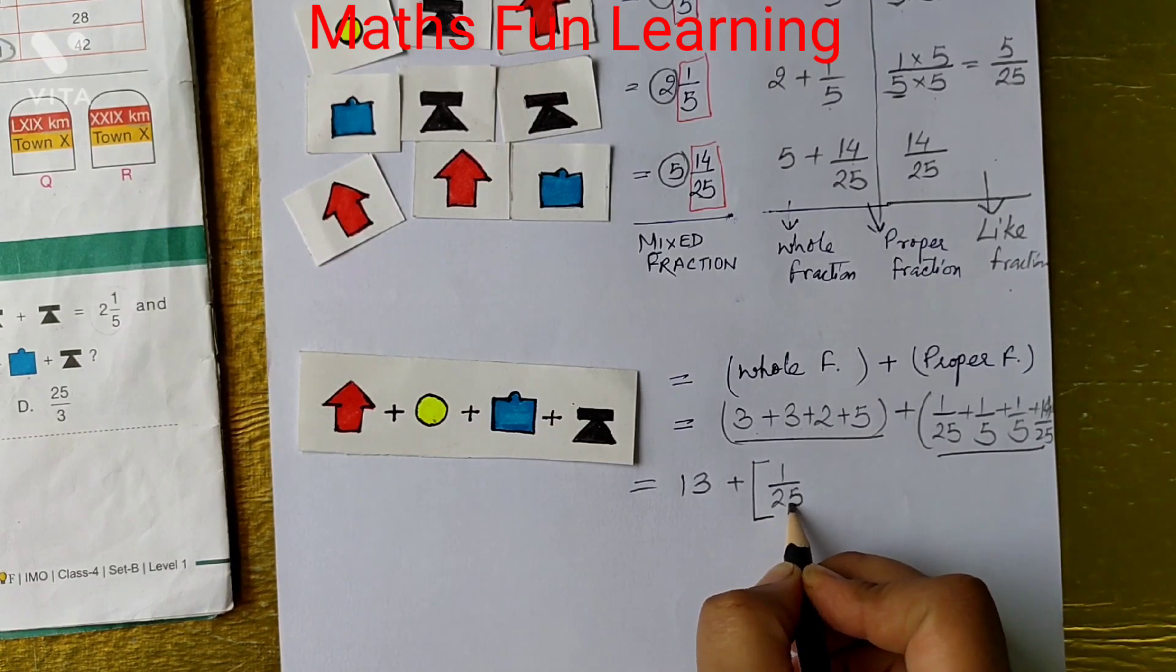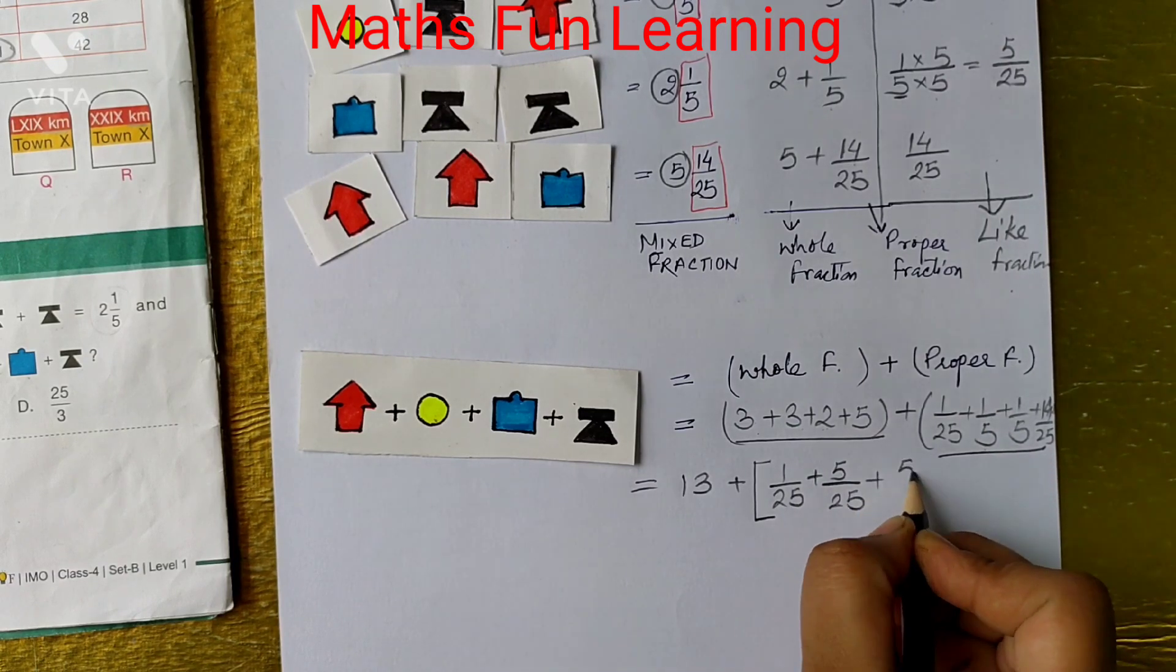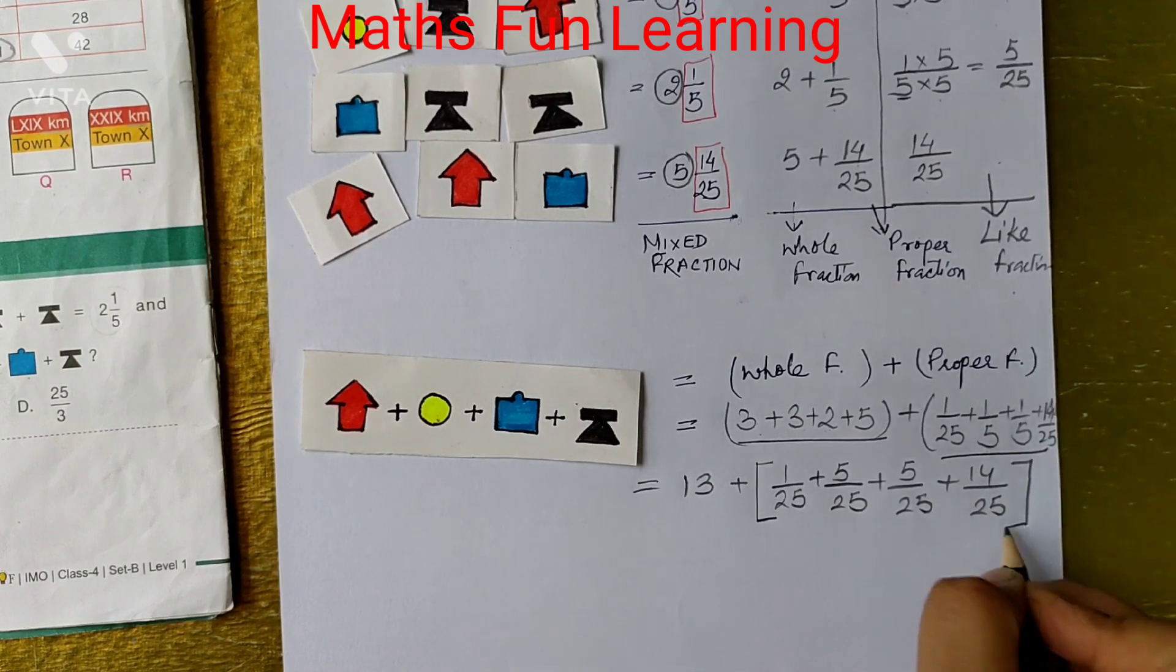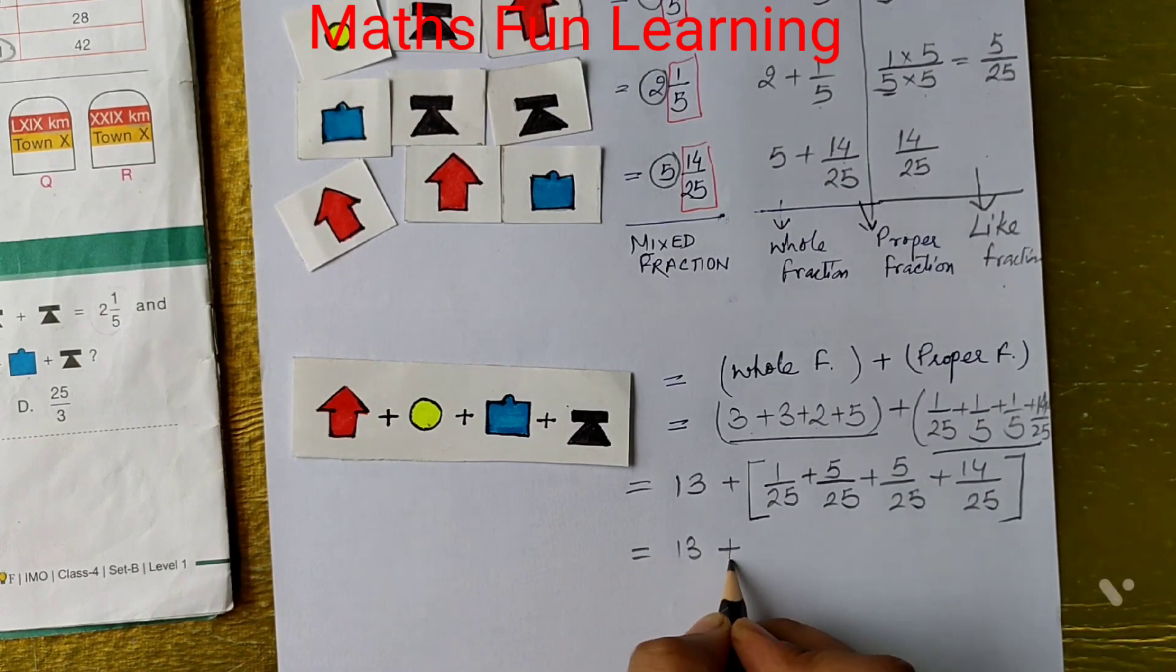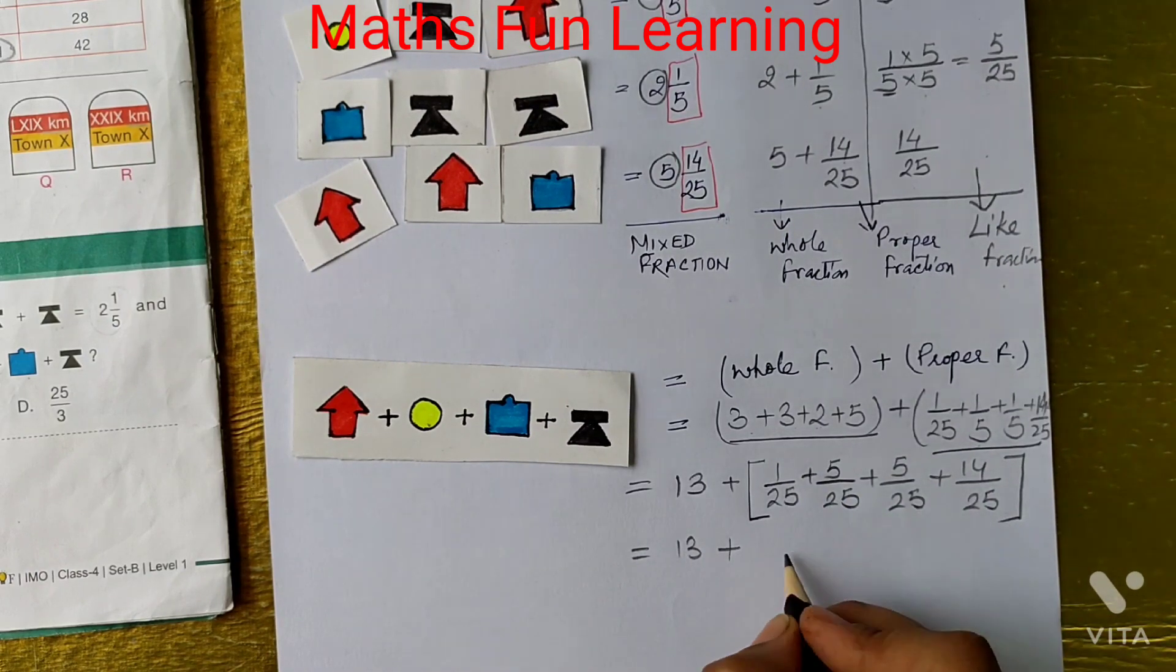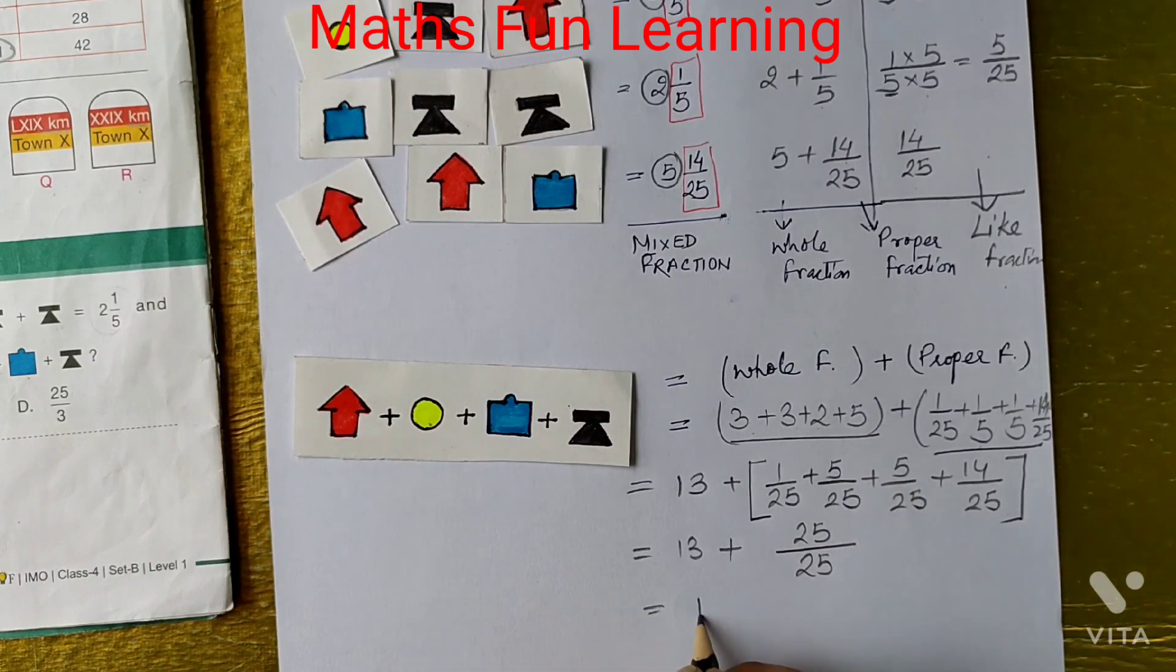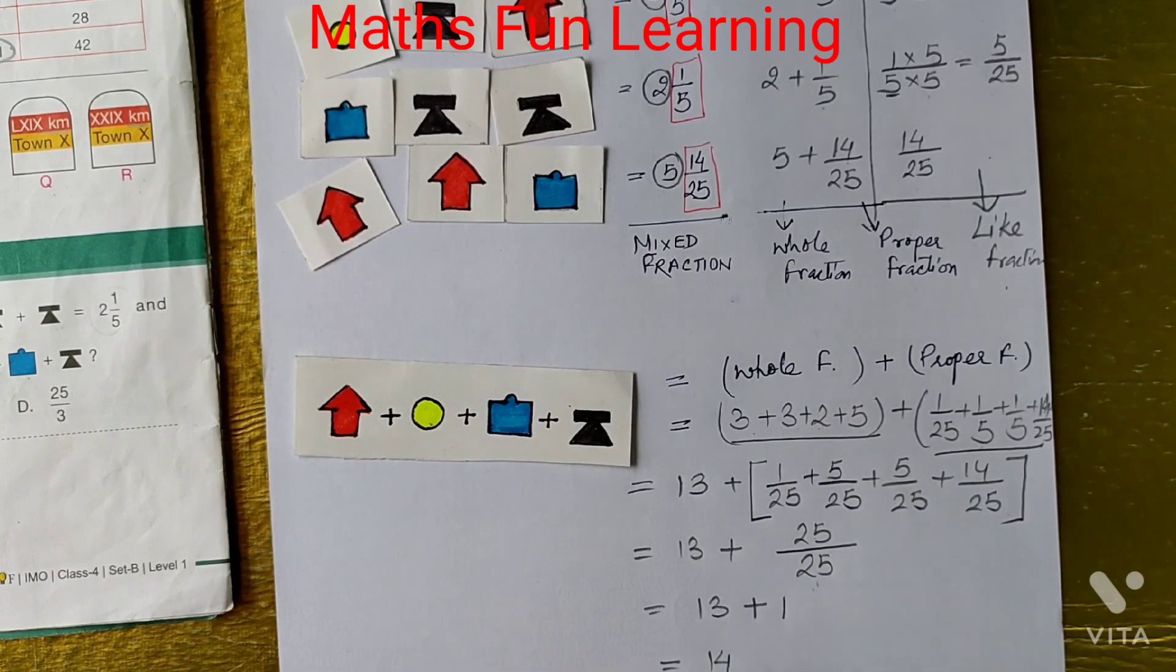So 1 by 25 plus this we changed to 5 by 25 plus again 5 by 25 plus 14 by 25. So these are the like fractions, kids. The like fraction means numerator you can easily add. If you add numerator you will get 25 only. What is this? Yes, it is divided by 1. So divided both will divide and it will give you 1, and the answer will be 14.